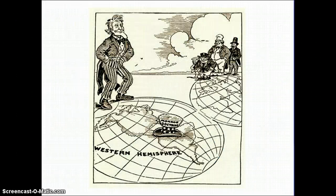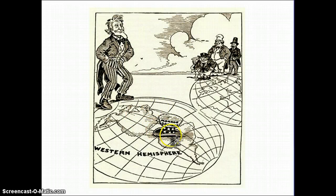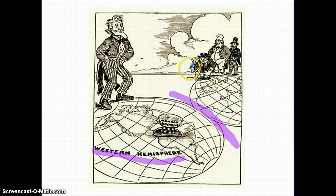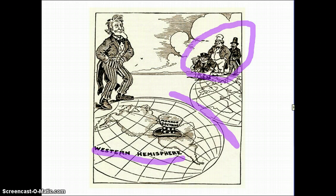A famous political cartoon demonstrates this exactly. It shows Uncle Sam issuing the Monroe Doctrine in South America, splitting the two hemispheres in half — the Western Hemisphere protected by Uncle Sam, with all the European countries sitting back across the Atlantic Ocean watching. If those European powers came across with force, Uncle Sam would kick them out.